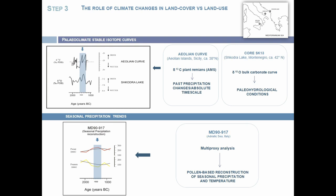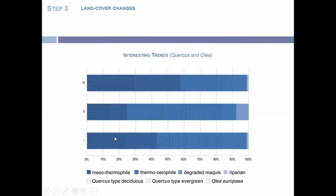Our attempt is to connect the different types of data. This is the land cover reconstruction from the charcoal analysis. We see a particular trend in oak presence: from the early phase, we have a drastic reduction in mesophilous oaks. We are speaking about Mediterranean areas, so there are very important changes in oak species. We have a reduction in mesophilous oaks, probably connected to climatic change toward drier environments.